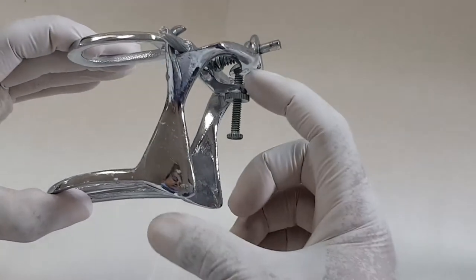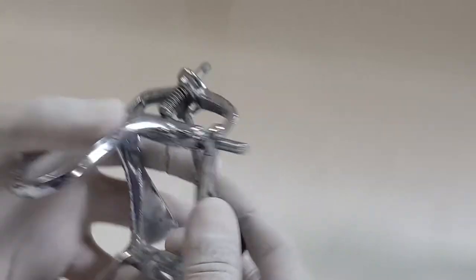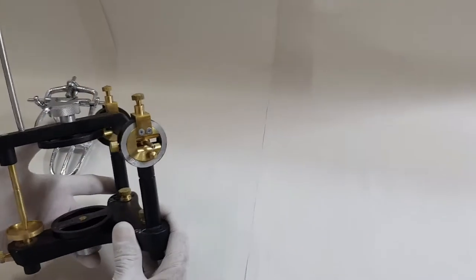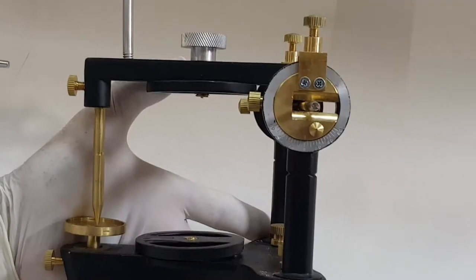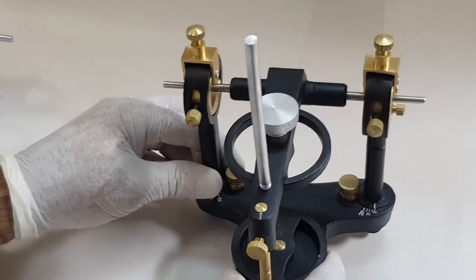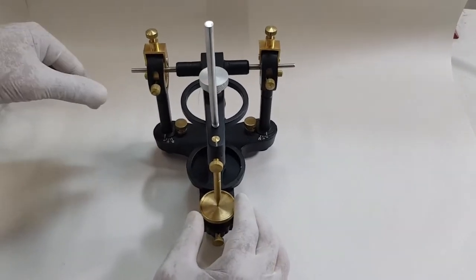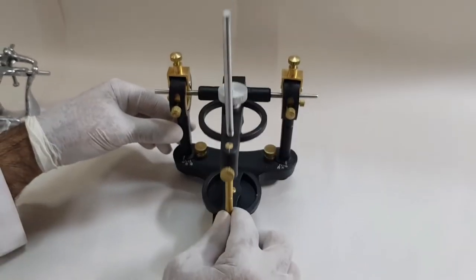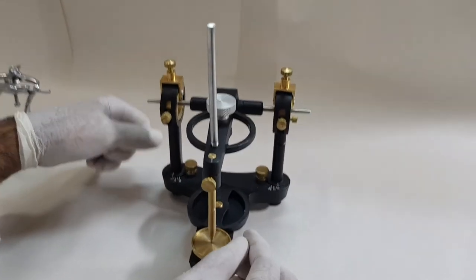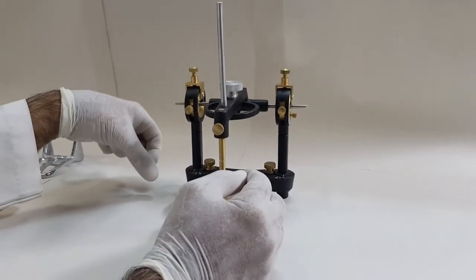The second articulator is a semi-adjustable articulator. This semi-adjustable articulator, the way we say it, it's semi-adjustable because it can perform lateral movements. It can perform certain protrusive movements and also hinge-like movements. But it cannot perform all the movements performed by the mandible. That is why it's not a fully adjustable articulator.